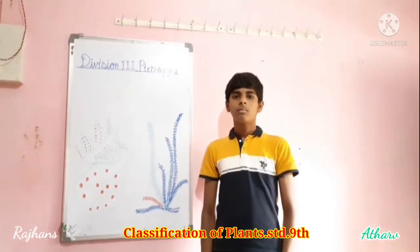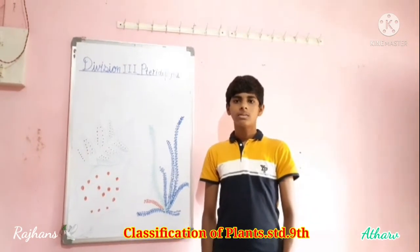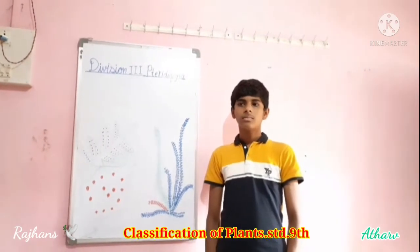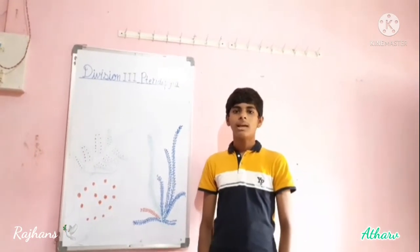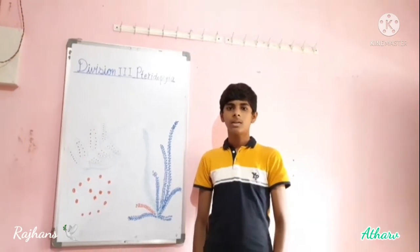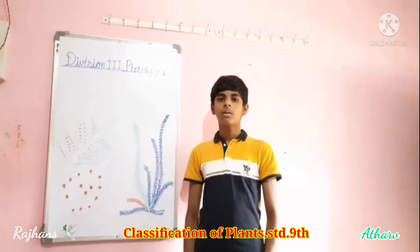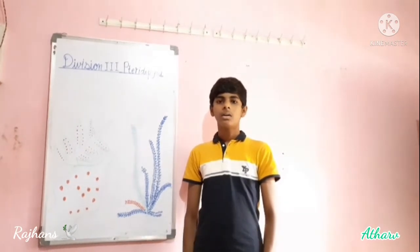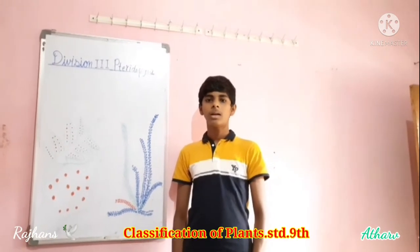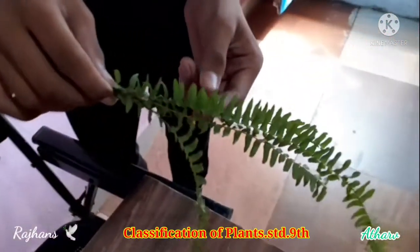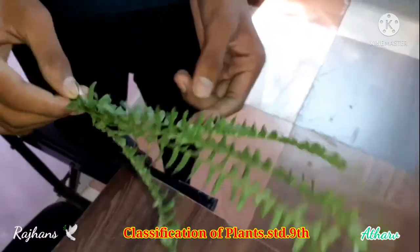Other examples include Selaginella and Lycopodium. These plants reproduce by both spore formation and sexual reproduction. They have a well-developed conducting system. This is one example of pteridophyta — this is a plant of fern, and this is the leaf-like part.